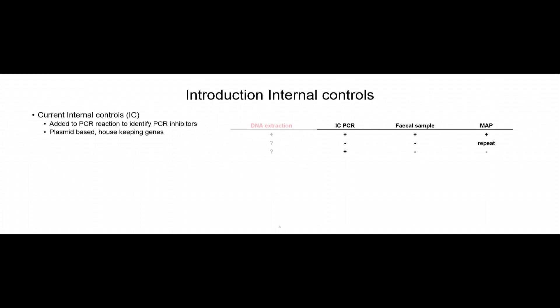If your internal control is positive and your fecal sample is negative, then most often MAP is negative as well. But what happens depending on the DNA extraction method you use? In one case you don't know if the PCR is inhibited or your DNA extraction is poorly executed. And if the fecal sample is negative but the PCR internal control is positive, it tells you the inhibitors are fine for that PCR reaction, but it doesn't tell you if your DNA extraction worked or that MAP cells are being lysed efficiently.